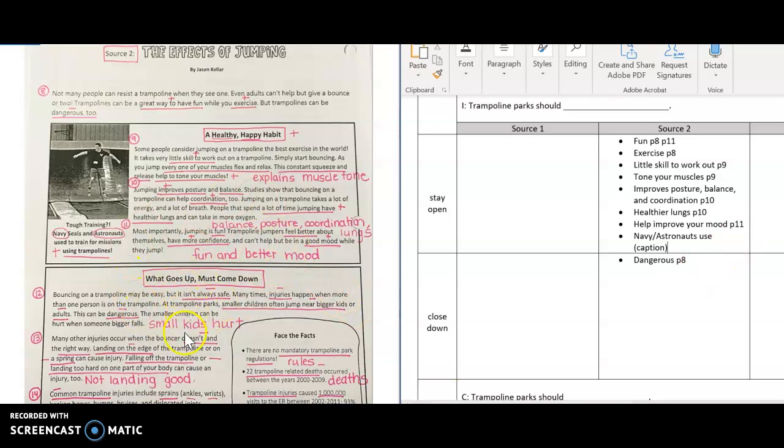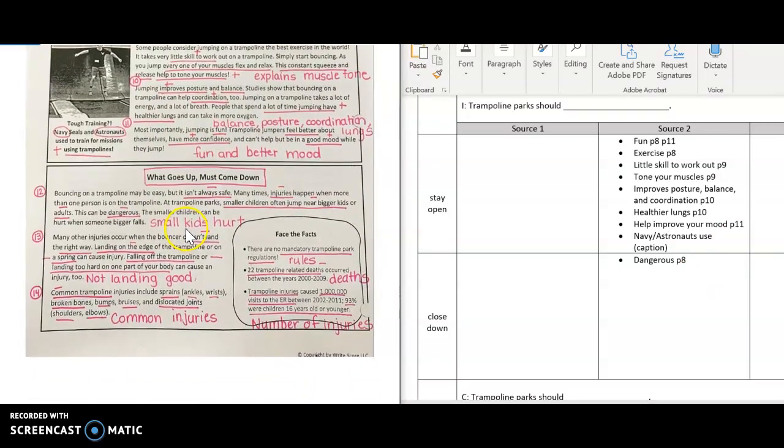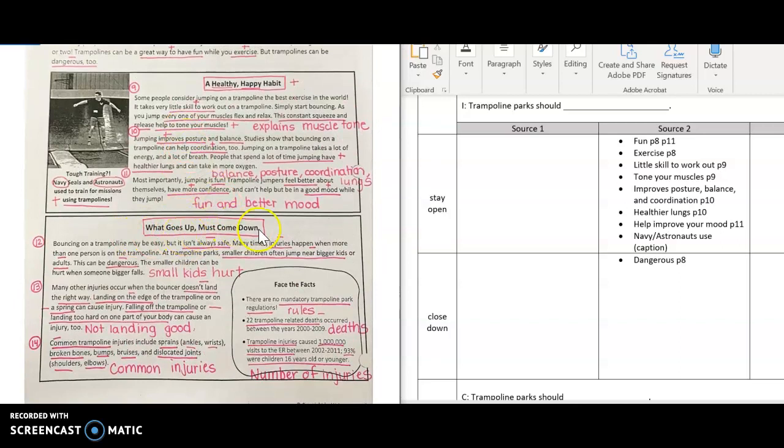Now we're down here. Let me scoop my text up so you can see it okay. What goes up must come down. We learned that just glancing at this I see a lot of negatives. So I'm going to now focus down here on the close down section. I already wrote that they're dangerous. That was all the way up here mentioned in paragraph 8 before we got started in this big healthy habit box.